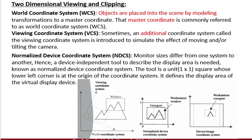Transforming the real world environment or image into the ratio of your mobile or computer display is known as the normalization device coordinate system. You can take a snap of this page for small questions.